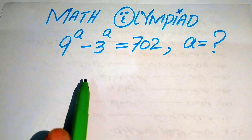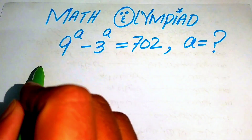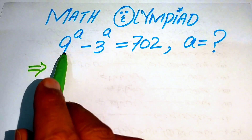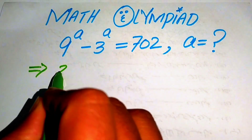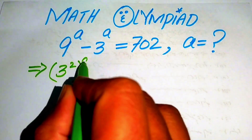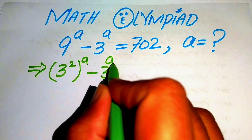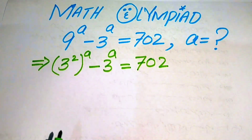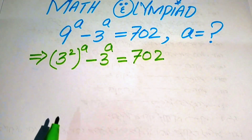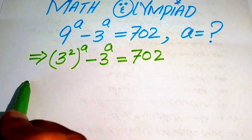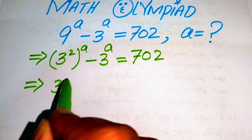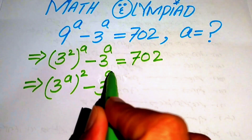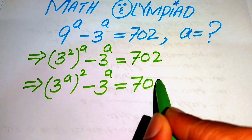The very first thing we are going to do is rewrite this exponential equation. In the first term, our base is 9 and we write this 9 as 3 squared, and its whole power a, minus 3 to the power of a equals to 702. We then use the exponential law and interchange the two exponents, writing the equation as 3 to the power of a, its whole square, minus 3 to the power of a equals to 702.